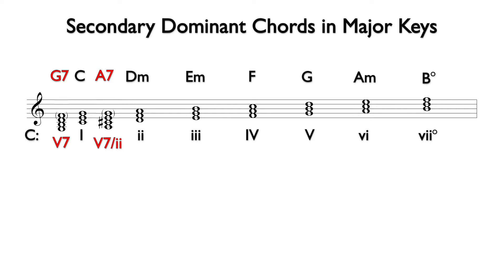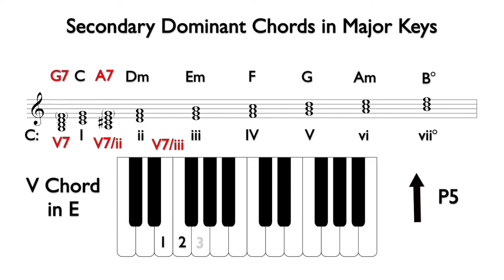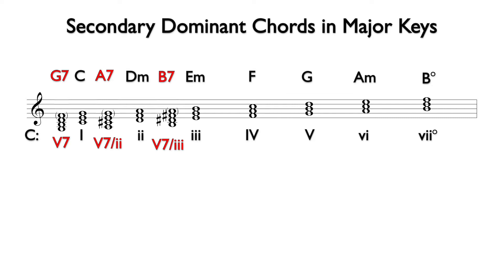Next, we will find five or V7 of three. We find the five chord in E, which is the interval of a fifth above E. This is B or B7, and the notes are B, D sharp, and F sharp for the triad, with A added for the seventh.